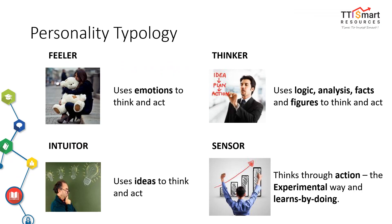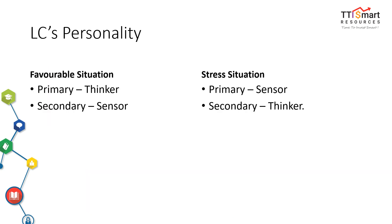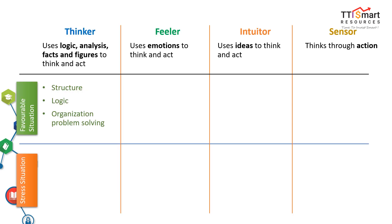Let's recap: the personality typology we are going to use is created by Carl Jung. There are four different types of personality in Carl's model: feeler, thinker, intuitor, and sensor. Before we discuss each personality in detail, I would like to share my own personality based on the results of the personality survey. When I am in a favorable situation, I am primarily a thinker with sensor attributes. My score in feeler and intuitor is not high. When I am in a stress situation, the thinker in me will give way to the sensor.